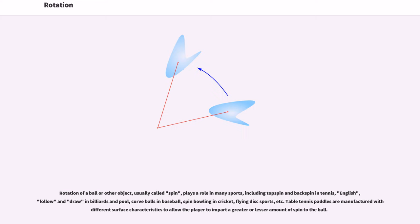Rotation of a ball or other object, usually called spin, plays a role in many sports, including topspin and backspin in tennis, English, follow and draw in billiards and pool, curve balls in baseball, spin bowling in cricket, flying disc sports, etc.